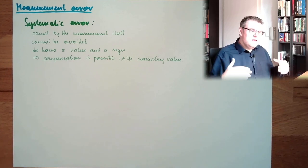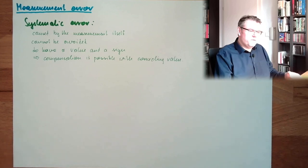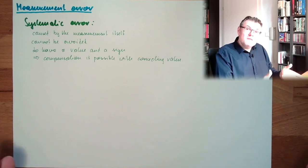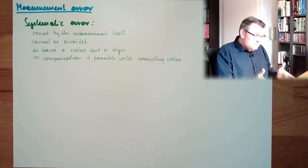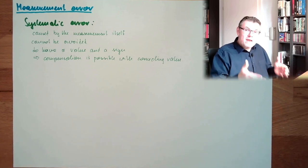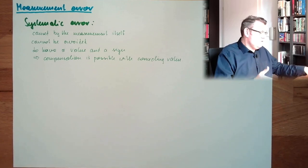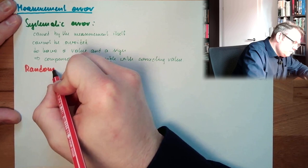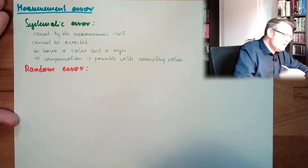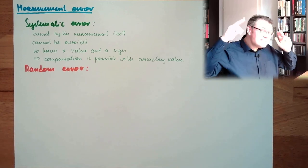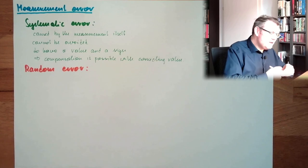Because if the same person, at the same object, performs the same measurement several times, we will get several results. Maybe not too different, but they will be different. This is not systematic errors — these are simply different results by random. These are random errors, another type of error.